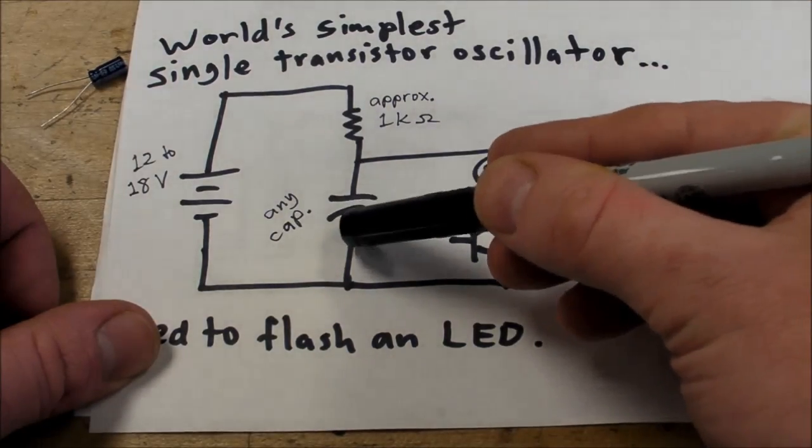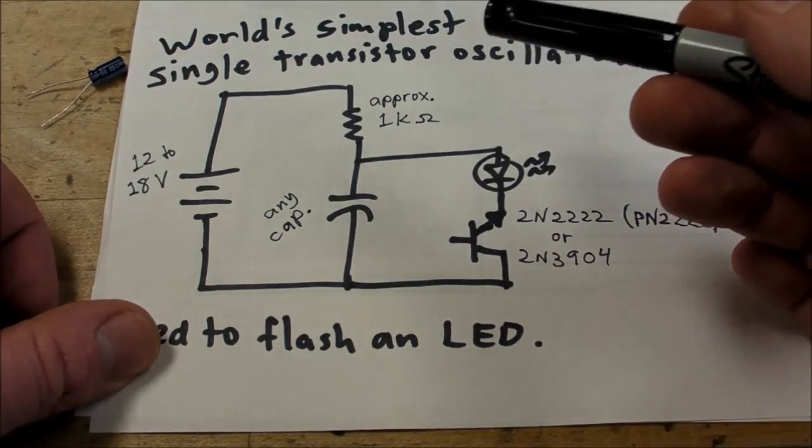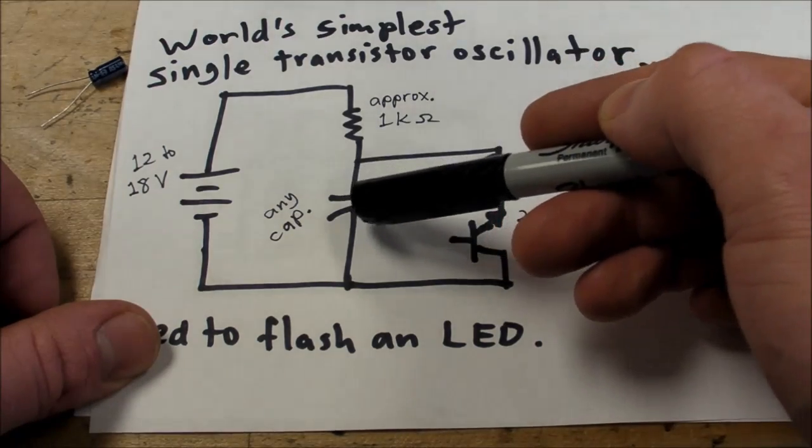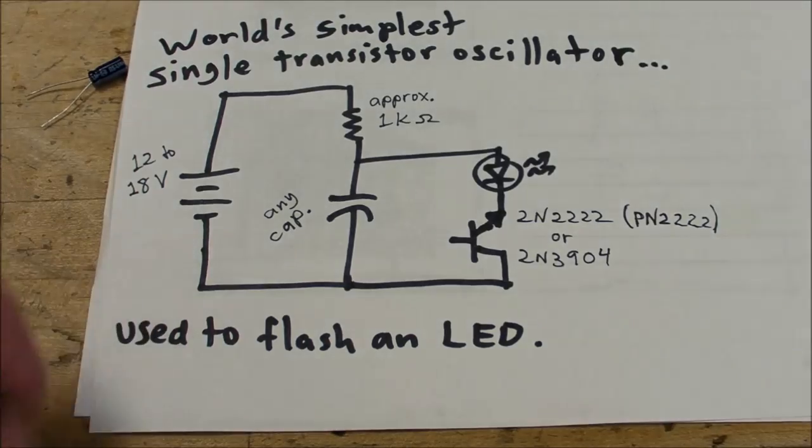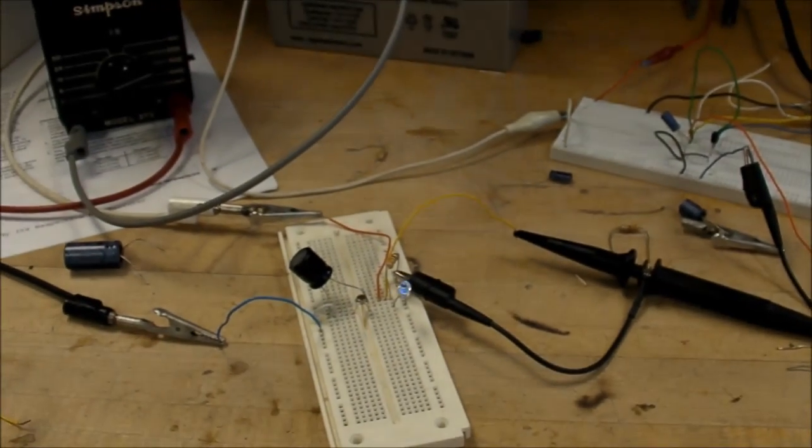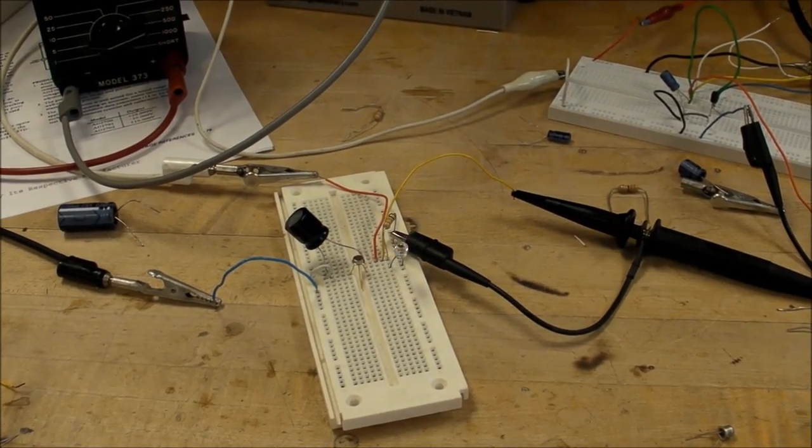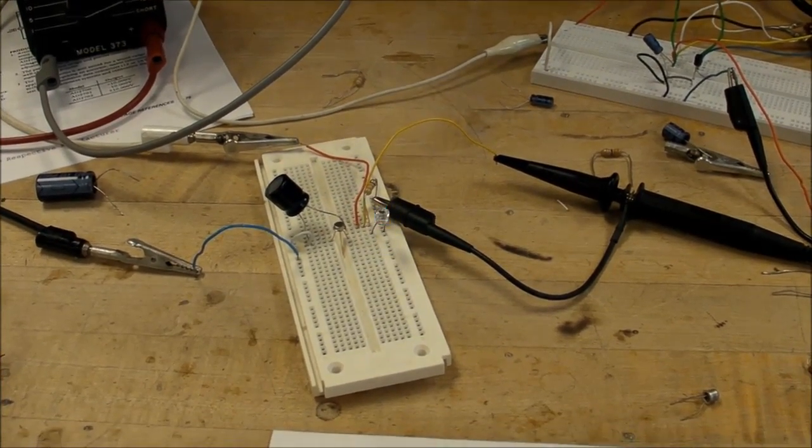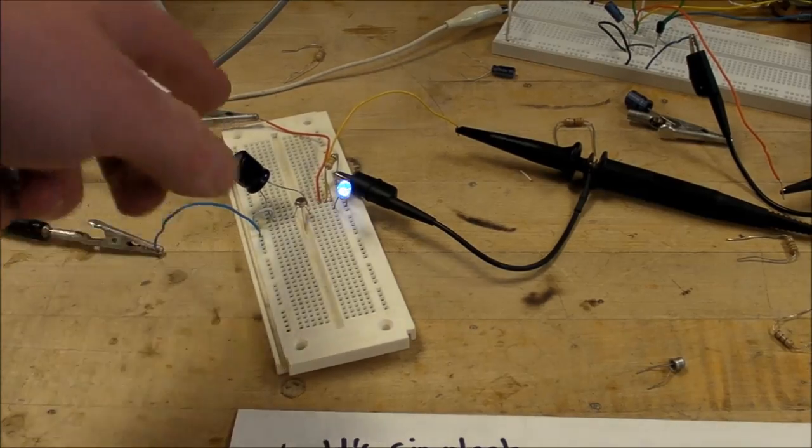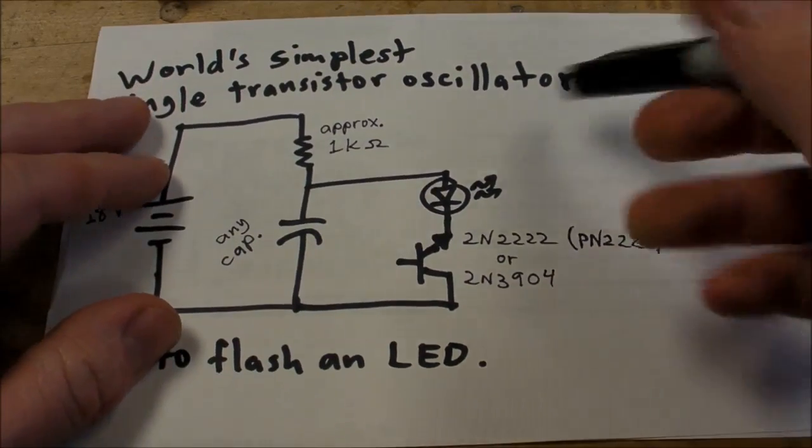The capacitor, however, you can put just about any capacitor you want - that all depends on what frequency you want. With this half hertz oscillation here, approximately one pulse every two seconds, I got a 1000 microfarad cap. And of course, if you want higher frequency, then you just put a smaller cap in there.